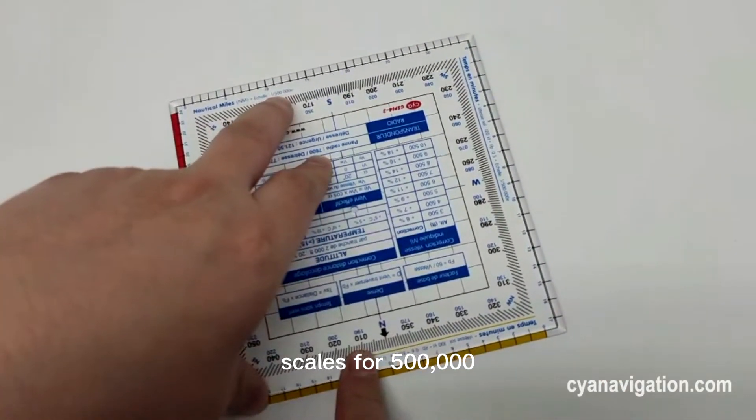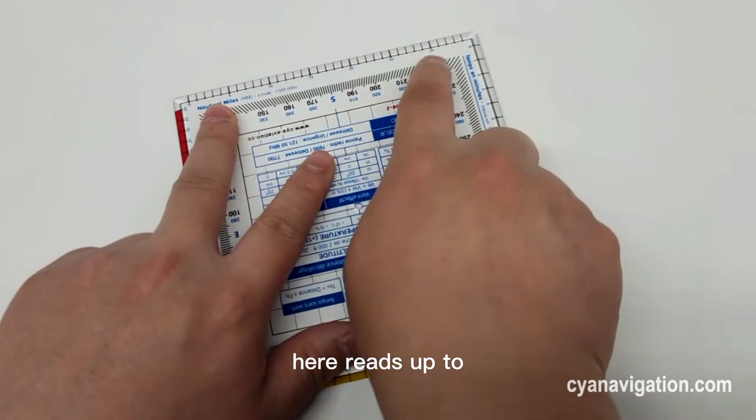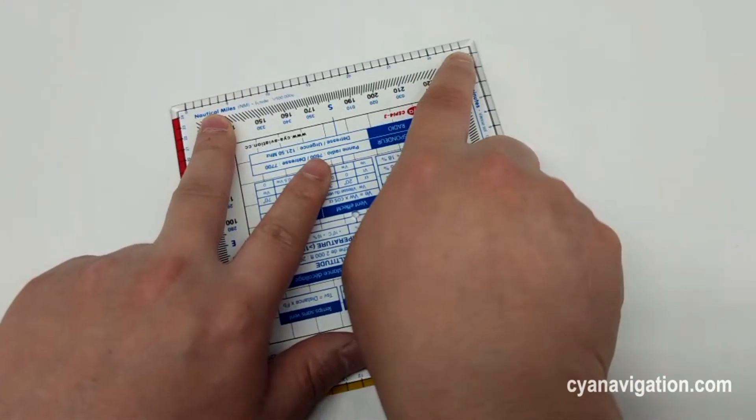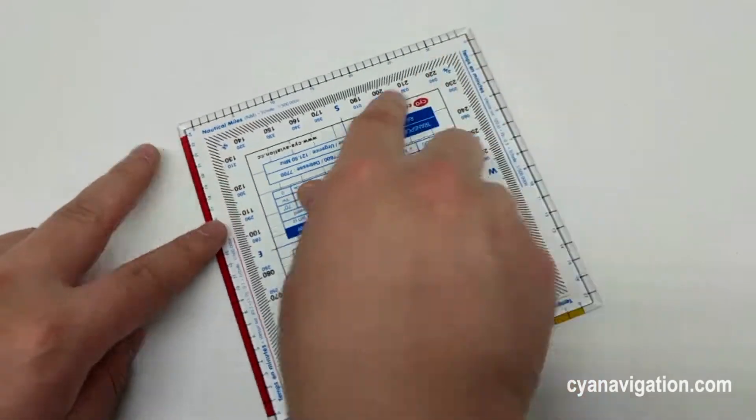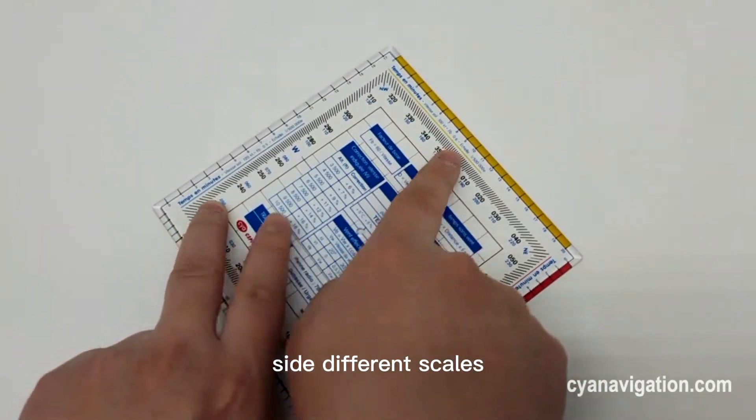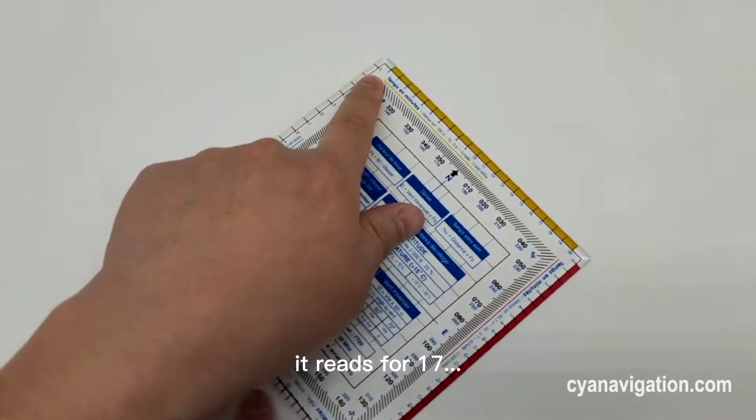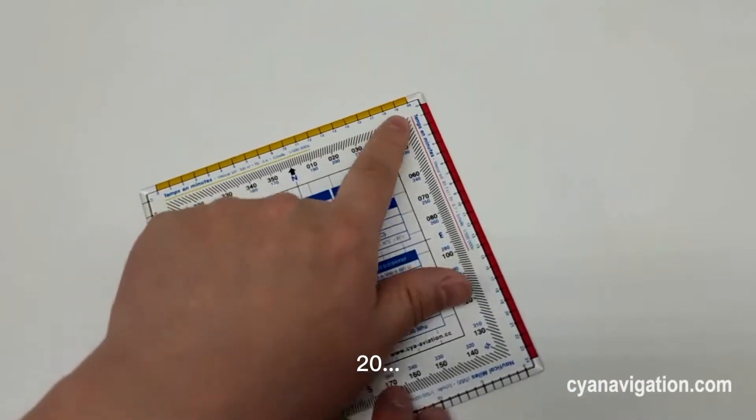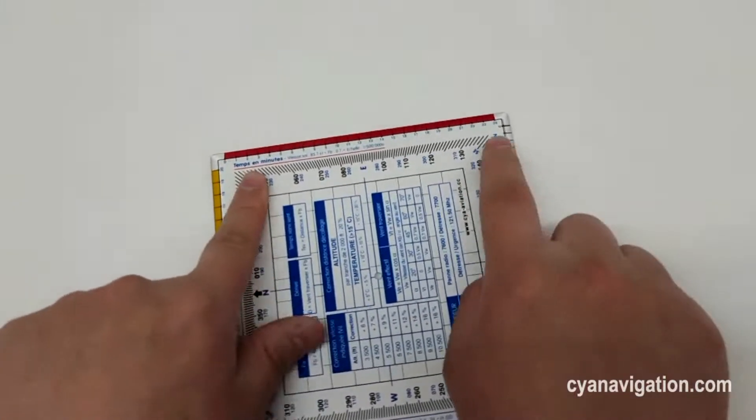Scales for 500,000. Here is up to 35. And also here, these side different scales, it reads for 17, 20, and 24.